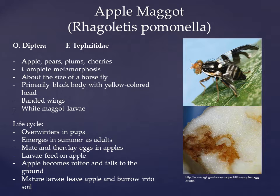This fly undergoes complete metamorphosis, starting off as an egg, hatching into a larva, and then becoming a pupa that finally results in an adult stage. Adults are typically five millimeters long, which is almost the size of a house fly. Their bodies are primarily black with some exhibiting a yellow-colored head. They have banded wings and these banding patterns can be used for identification against similar looking fruit flies. The larva of this species is a typical maggot that is white and worm-like with no distinct head.